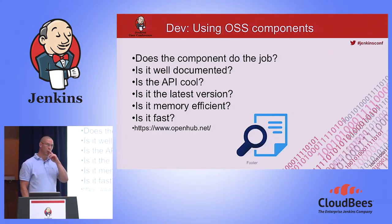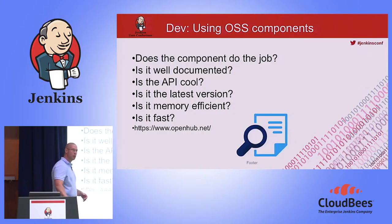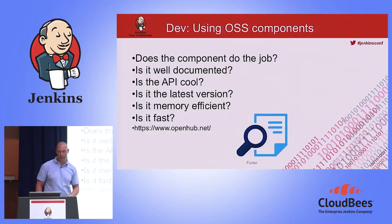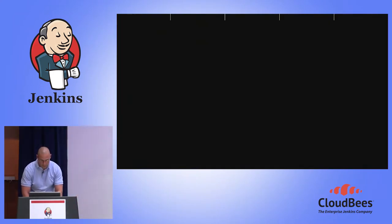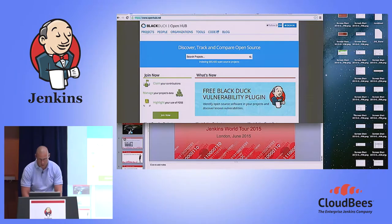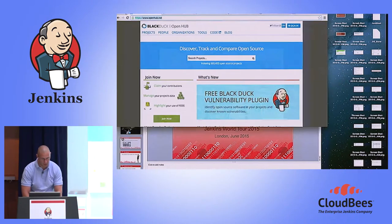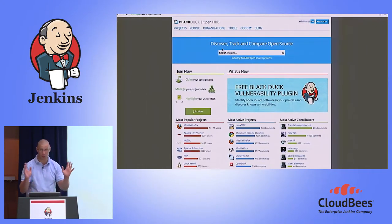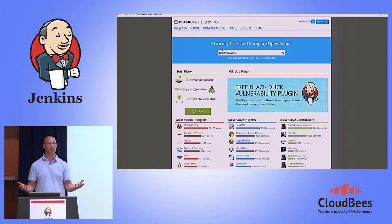One thing I want to point out: if you want to select which open source to use, there's a neat site called the Open App. You can access it, and you don't have to pay for it — it's free. What kind of open source do you need? What kind of functionality are you looking for?